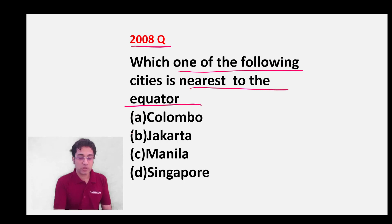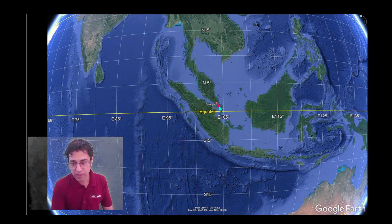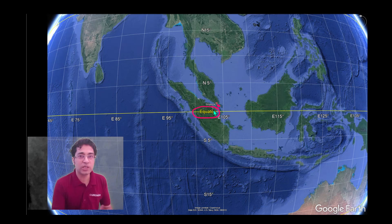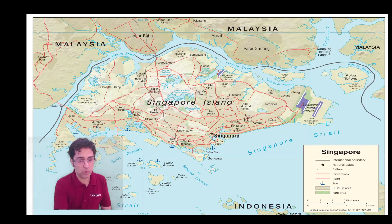The answer is Singapore. I will just show it to you on the map. Look at this — this is Singapore. Singapore is located very close to the equator, whereas all the other given options were very far from the equator. I will also show it to you on a larger map.